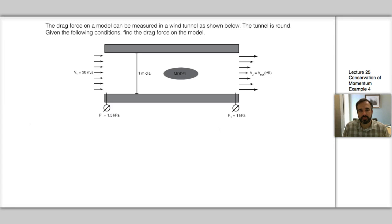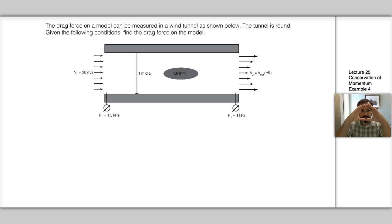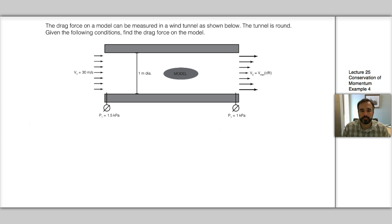In this video we're asked to find the drag force on a model due to the flow through a wind tunnel. We're told that the wind tunnel is round and has a one meter diameter, and the upstream flow velocity is 30 meters per second, and that flow is uniform across the wind tunnel.